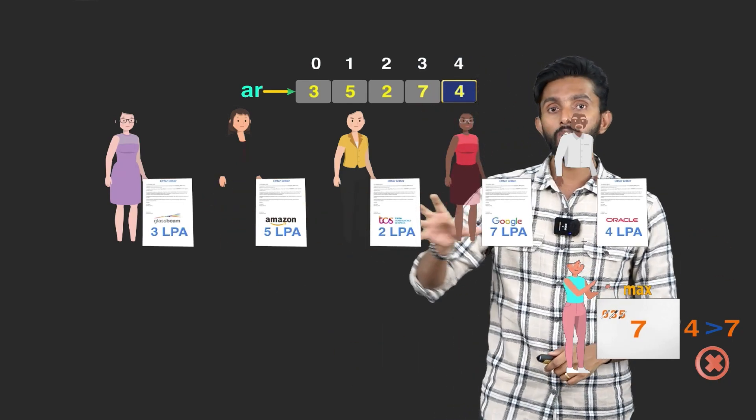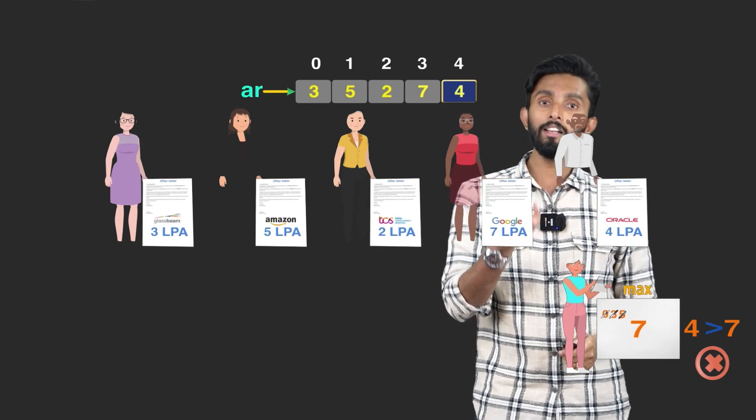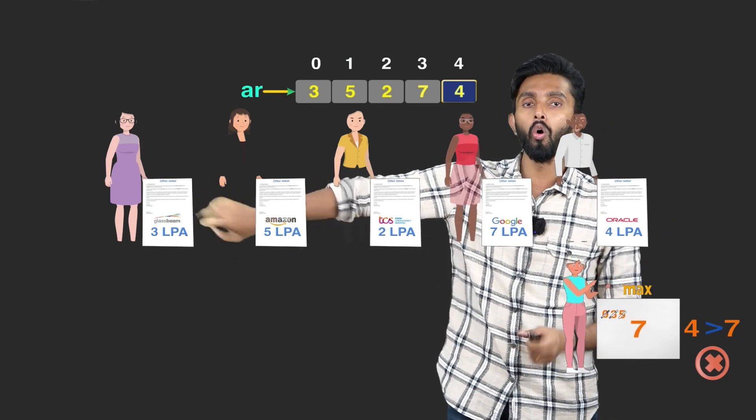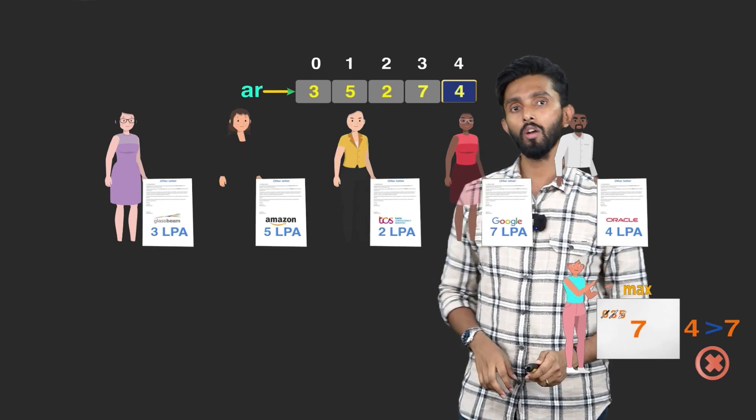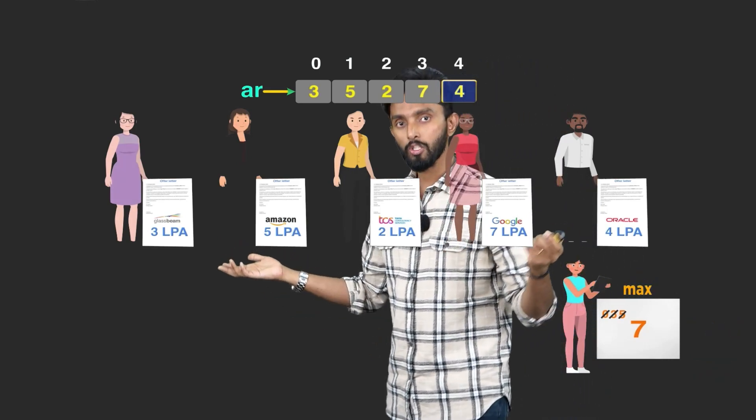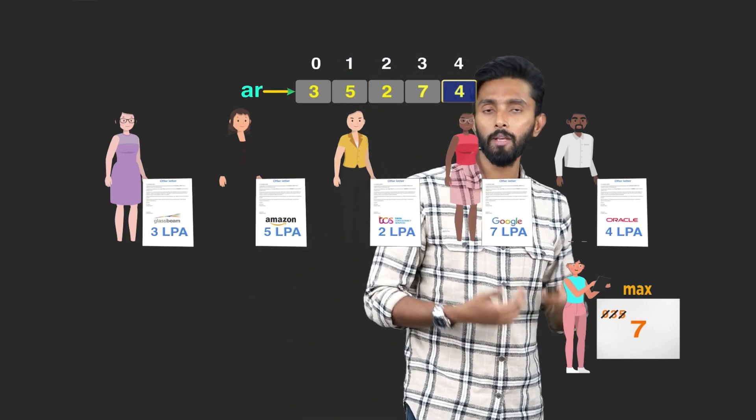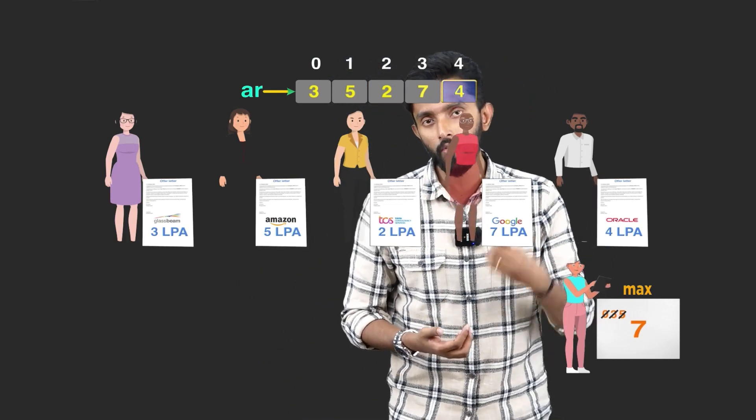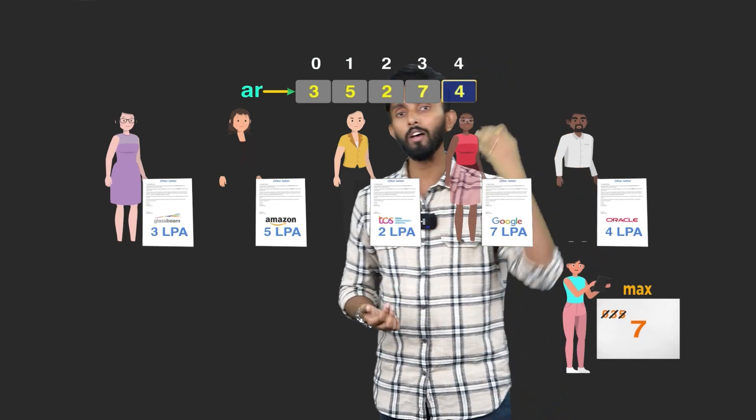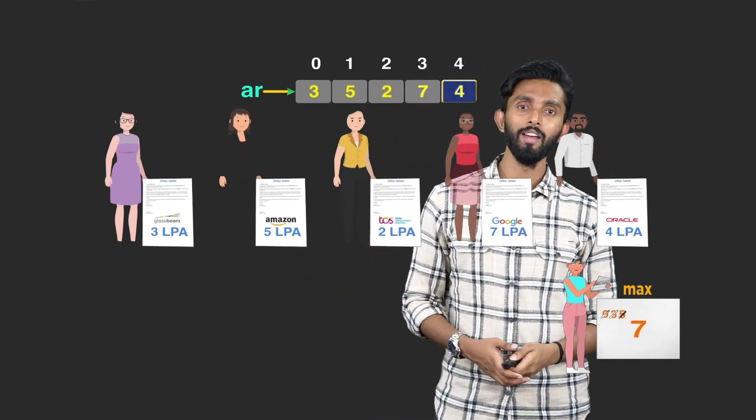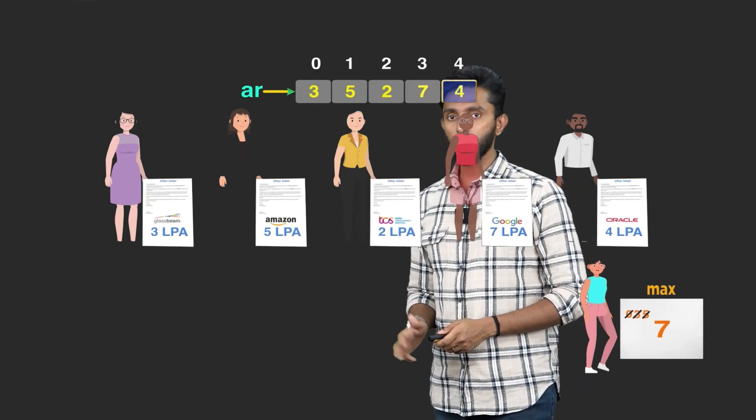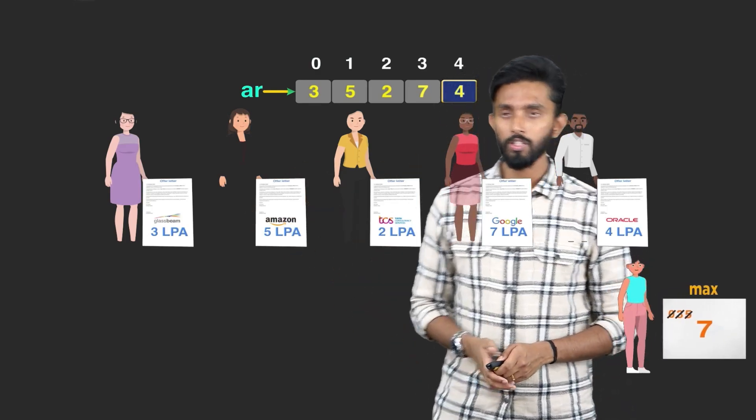Now, what I showed you is logic. Now, converting logic into code is called as programming. The language of choice we are going to use is called as Java. But same logic can be implemented in C, C++, Java, Python, Ruby, C Sharp, Scala, Kotlin, any language.